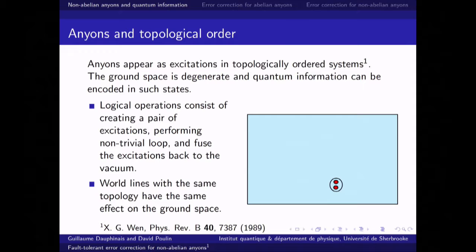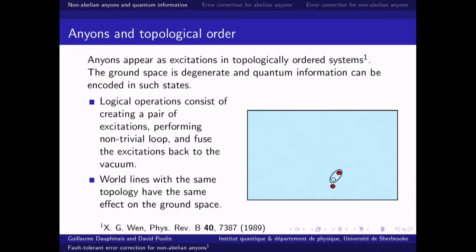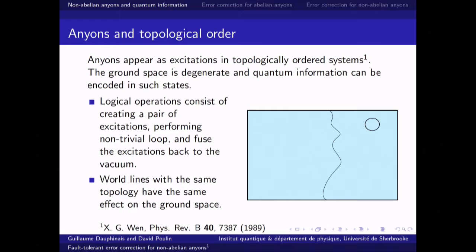I'll say a few words about topological order. Imagine we live on a torus with identified boundaries. We have a degenerate ground space that we can use to encode information. Logical operators work as follows: apply a local operator to create a pair of excitations from the vacuum, displace one partner around a non-trivial loop, and fuse it back with its partner. You're back in the ground space, but you've applied a non-trivial homological operation. If it's an unwanted process, it corrupts your information. The only thing that matters is the topology — you can deform them continuously without changing their effect.